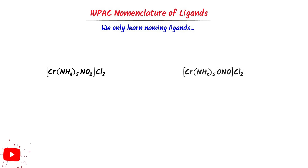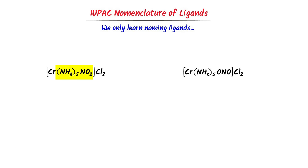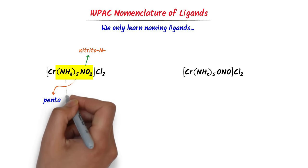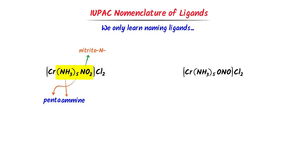Now consider these coordination compounds. In this case, there are two ligands: NH3 and NO2. Remember that this NO2 ligand is known as nitrito-N. According to alphabetical order, ammonia is written first, then nitrito-N. There are five molecules of ammonia, so I write 'pentaamine'. For the NO2, I write 'nitrito-N'. Thus I get 'pentaamine nitrito-N'.